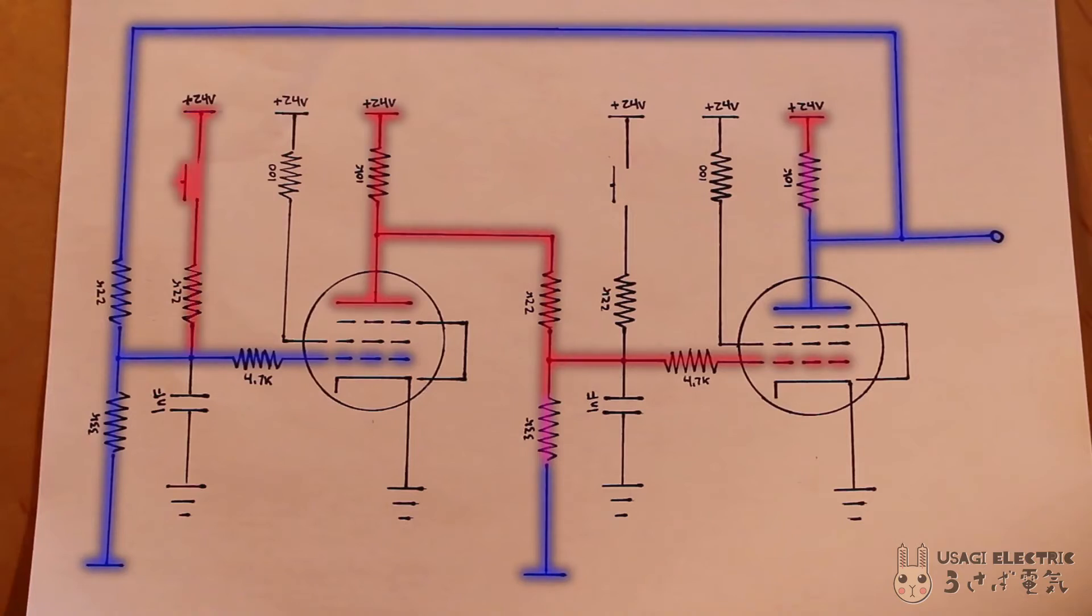When pressing the set button, the opposing tube's grid is pulled high, which then brings its output low. That low output is then fed into the original tube, bringing its output high and storing a 1 in the flip-flop.